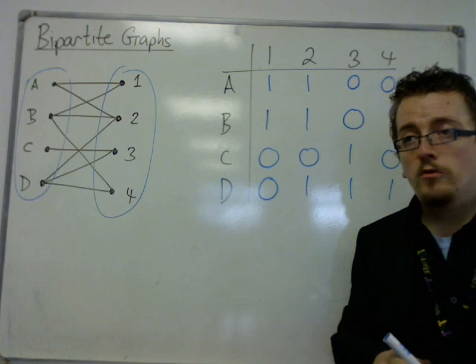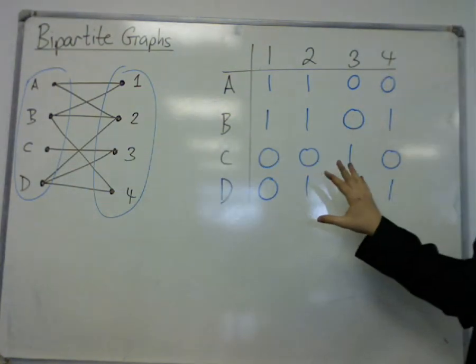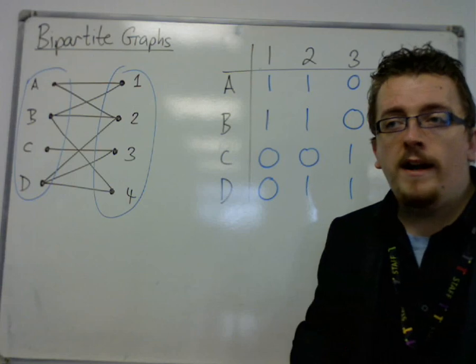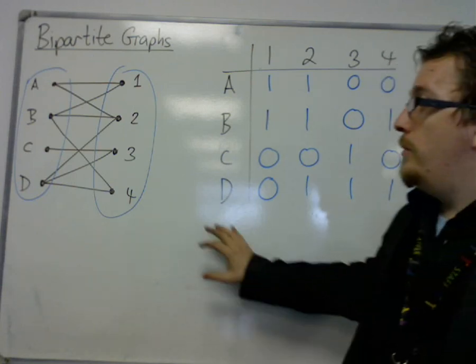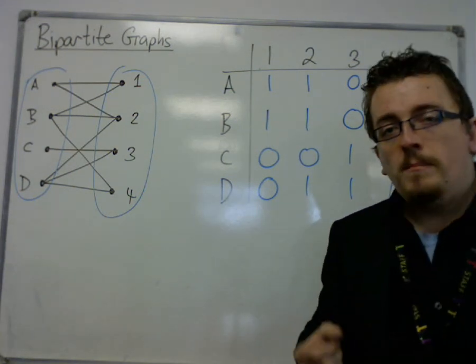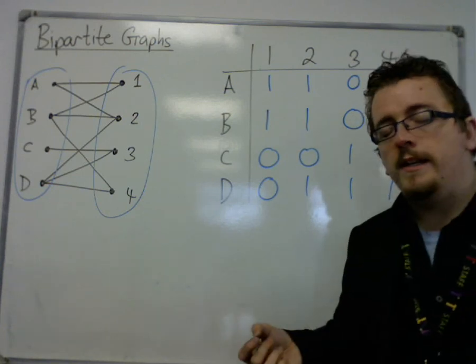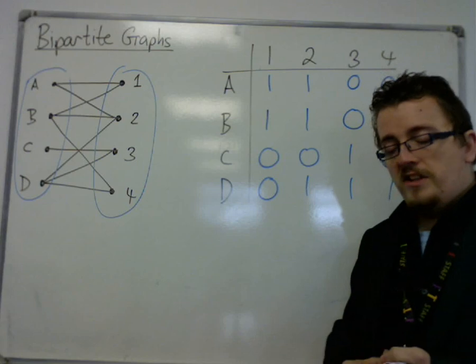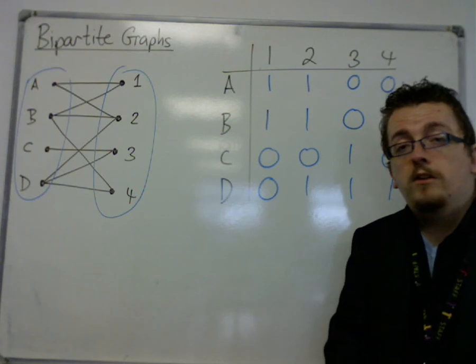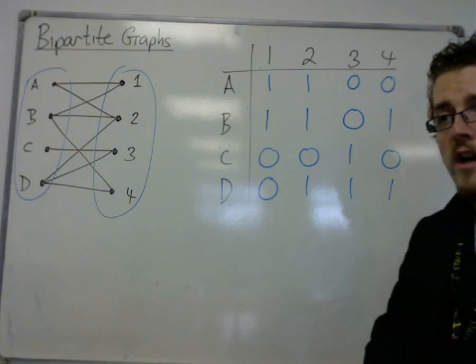So it may be your job in the exam to go from the graph to an adjacency matrix or from an adjacency matrix to a graph. And that would probably be a part A of a question. So make sure you're going from one to the other with a bit of practice. Make sure you check as well. Do a double check because if you make a mistake in that part A for those couple of marks, firstly you won't get both of the marks. And secondly, it may end up ruining your part B where you actually have to use your graph. So be careful. Double check what you're doing here.